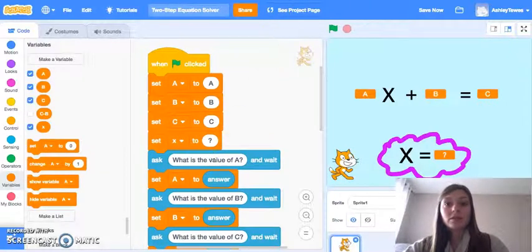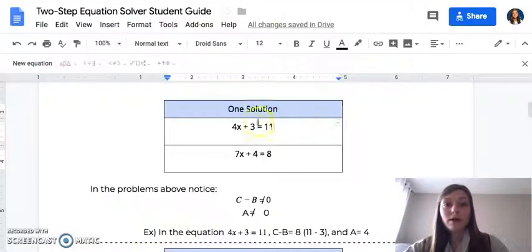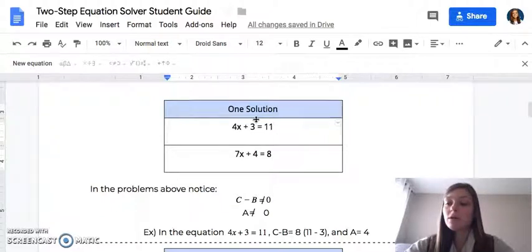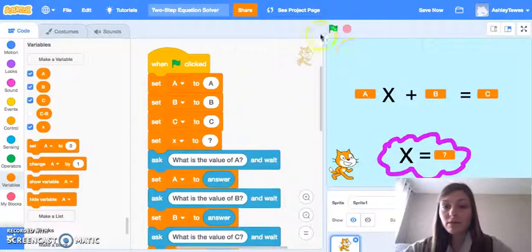Now, it's always nice to check your program. So if we came back here to this one solution, we have 4X plus 3 equals 11. We would subtract 3 to give us 8. Divide by 4, we should get X equals 2. Let's trial this in our program, and let's see if this works.